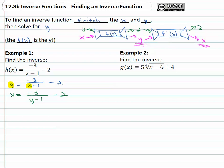Well to do that, first we have to get rid of this lone minus 2 out here. We're going to move the 2 over by adding 2 to both sides. That's going to give us x plus 2 equals negative 3 over y minus 1.